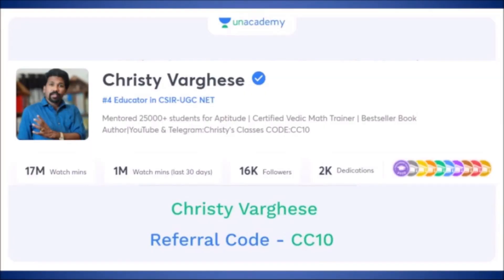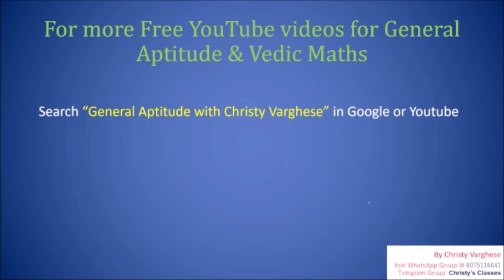And if you want live free classes for General Aptitude, you can download an academy mobile application and search this profile Christie Verges. And you can see 300 plus pre-recorded videos and upcoming daily live classes happen at 11 am Monday to Friday. 11 am free classes happen in this profile. So you are welcome to attend these free classes also.